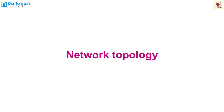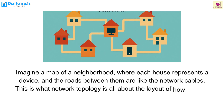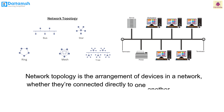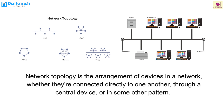Let's learn about network topologies. Imagine a map of a neighborhood where each house represents a device and the roads between them are like network cables — this is what network topology is all about. Network topology is the layout of how devices in the network are connected — whether directly to one another, through a central device, or in some other pattern. It's like the blueprint of your network.